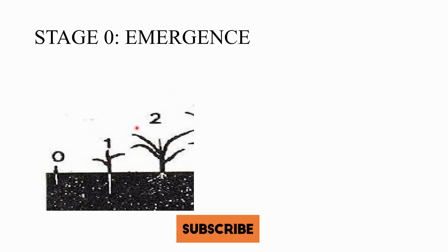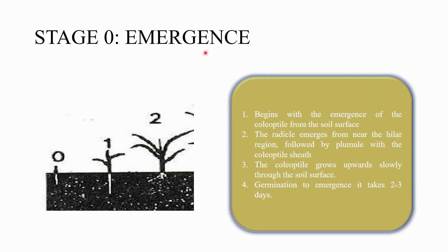Stage 0 is the emergence stage. The time taken from germination to emergence is about 2 to 3 days. It begins with the emergence of the coleoptile from the soil surface. After that, the radicle starts emerging from the hilar region, which is followed by the plumule and the coleoptile sheath.